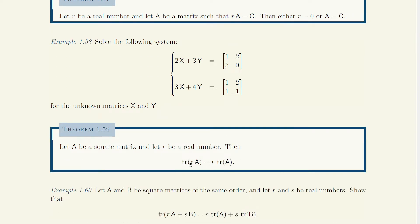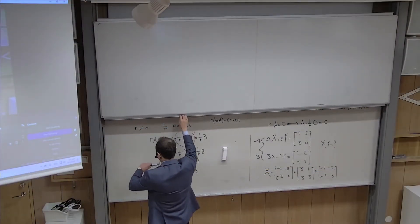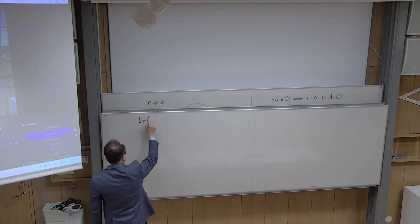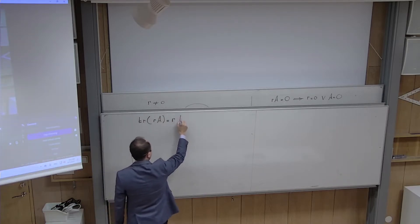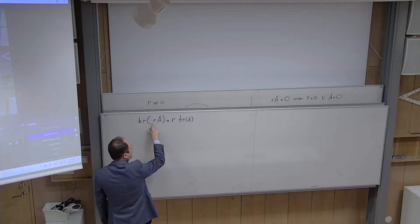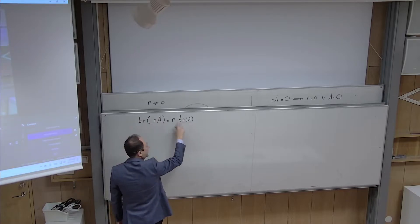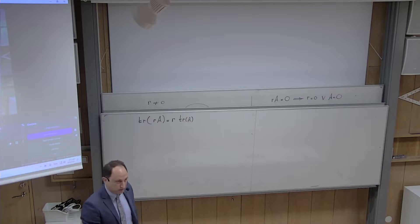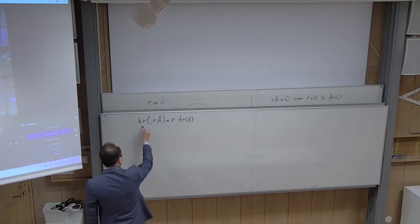Now, if you have a square matrix A and you multiply it by r, you are multiplying every entry by r. It's clear that if you add up the entries on the main diagonal it would be r times larger. Let us formally prove this: we want to show that the trace of rA equals r times the trace of A. It doesn't matter if you multiply first and then take the trace, or take the trace first and then multiply — these operations commute.